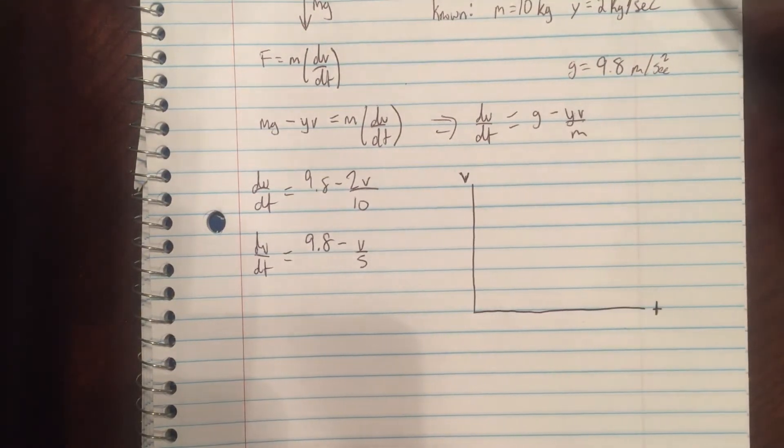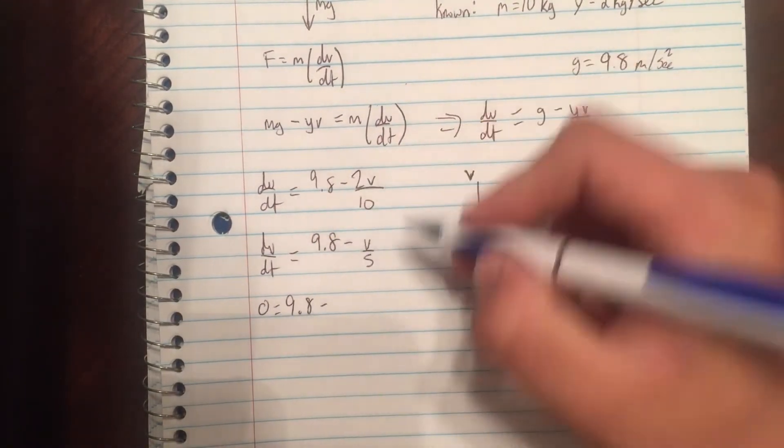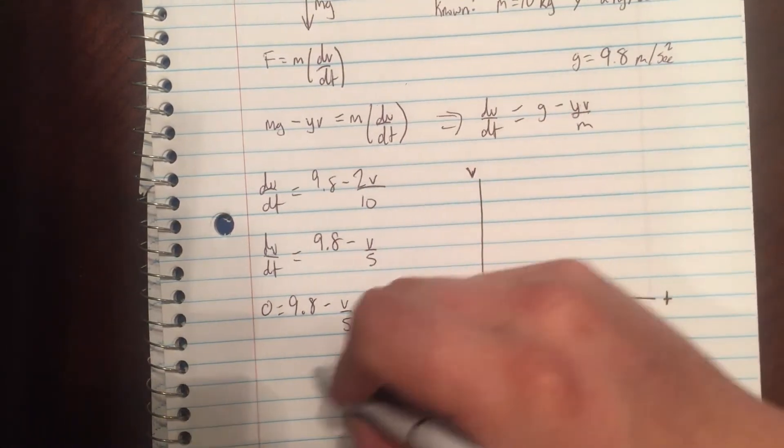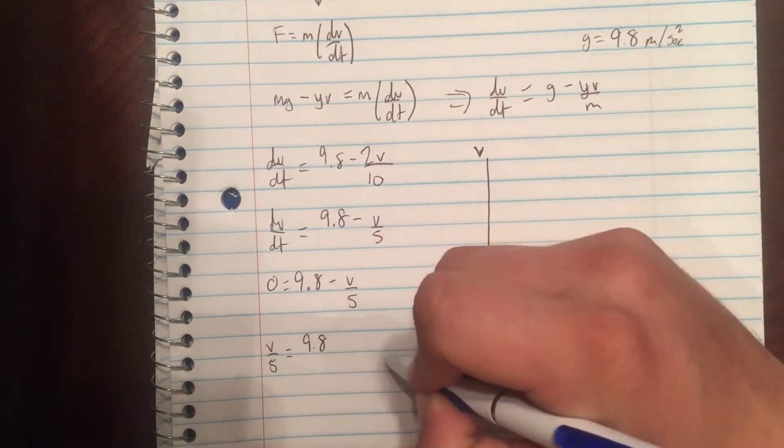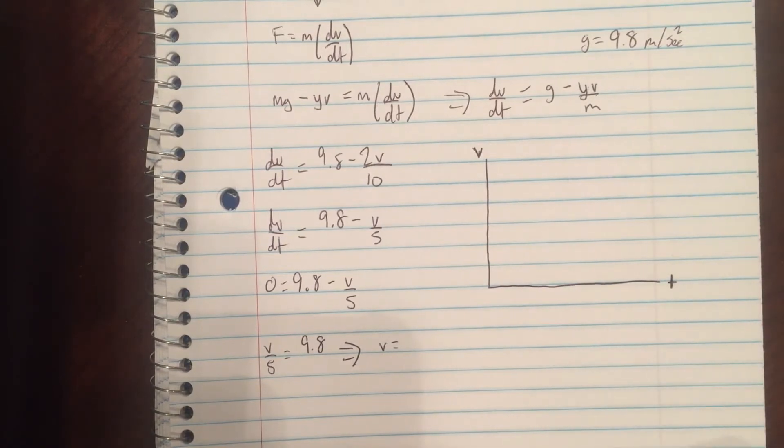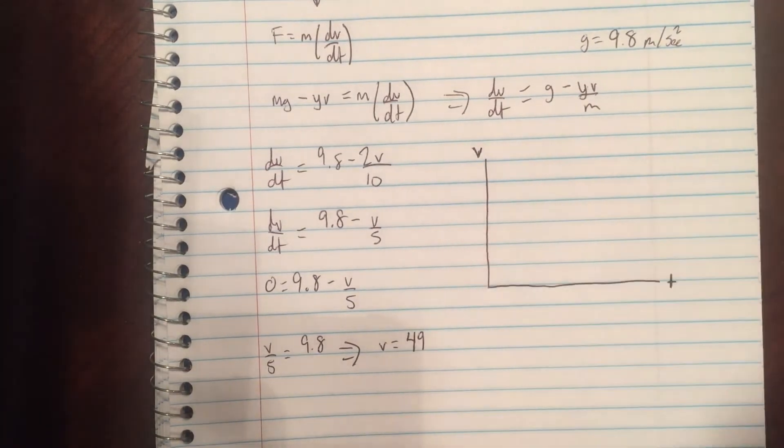We're going to set this equal to 0. So 0 equals 9.8 minus v over 5. So v over 5 equals 9.8, and then v is going to be equal to 9.8 times 5, which is 49. So v is 49.